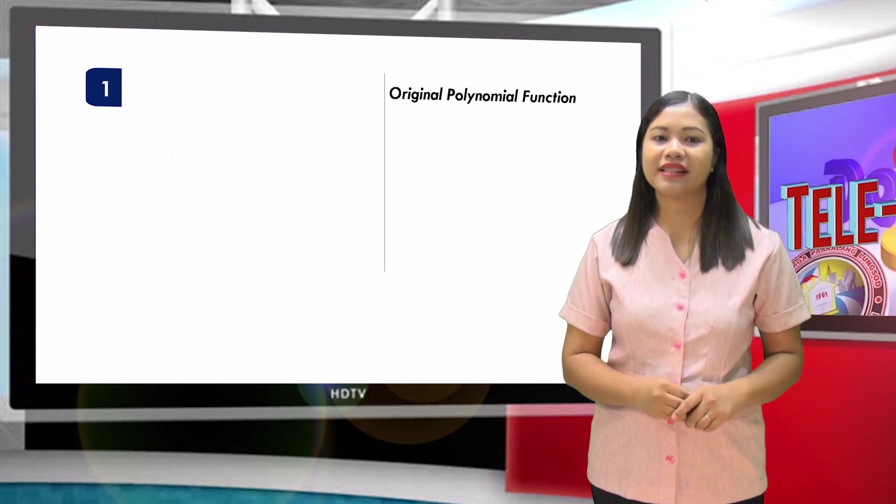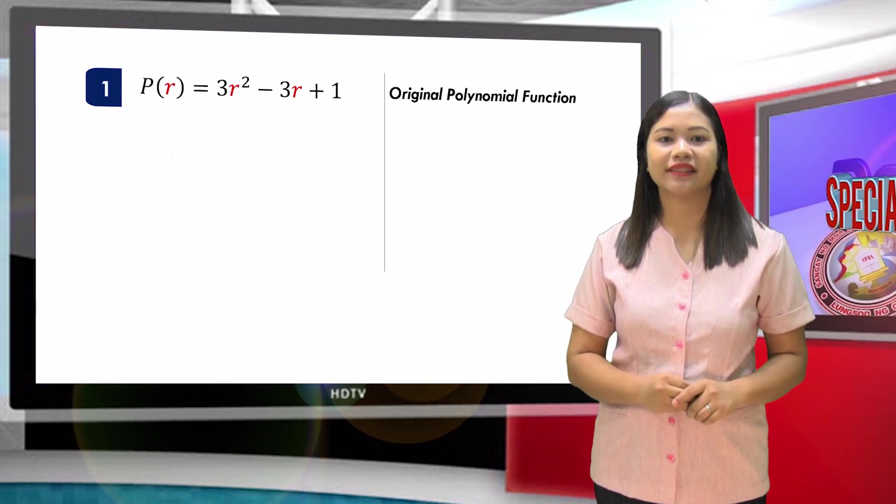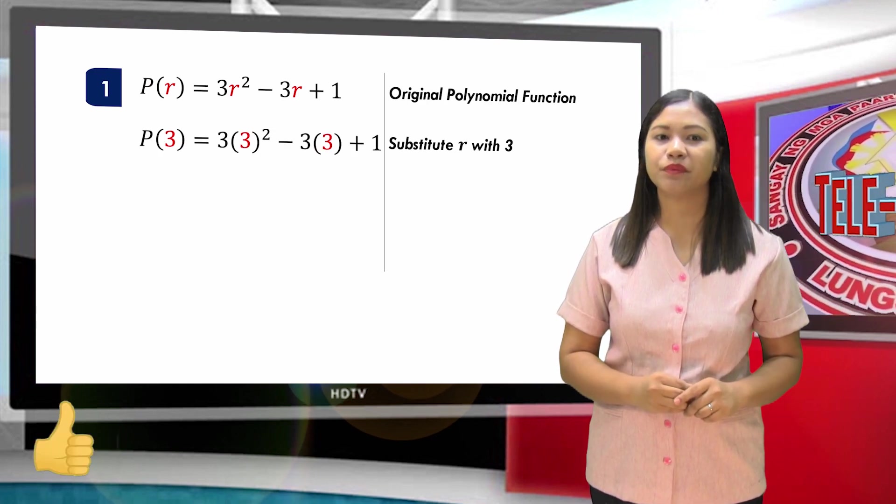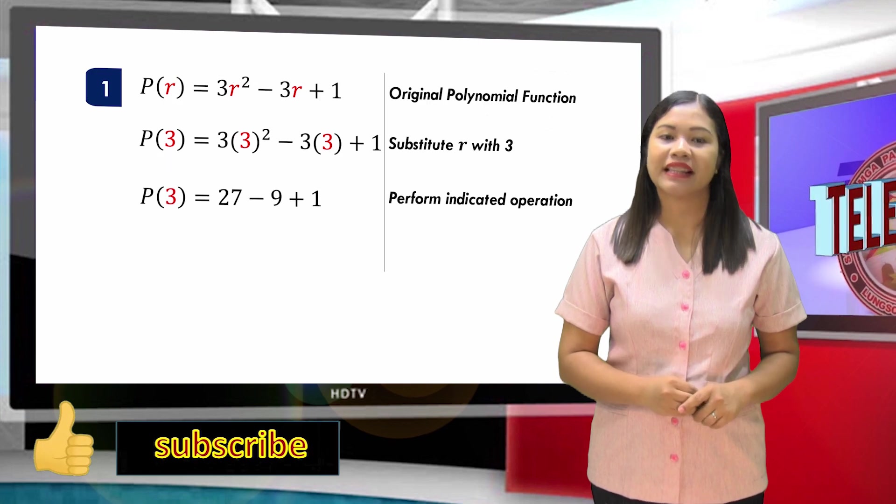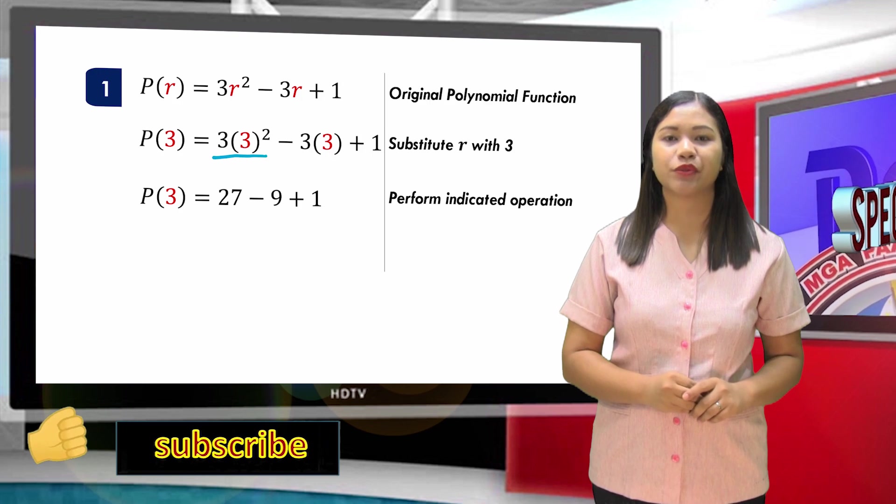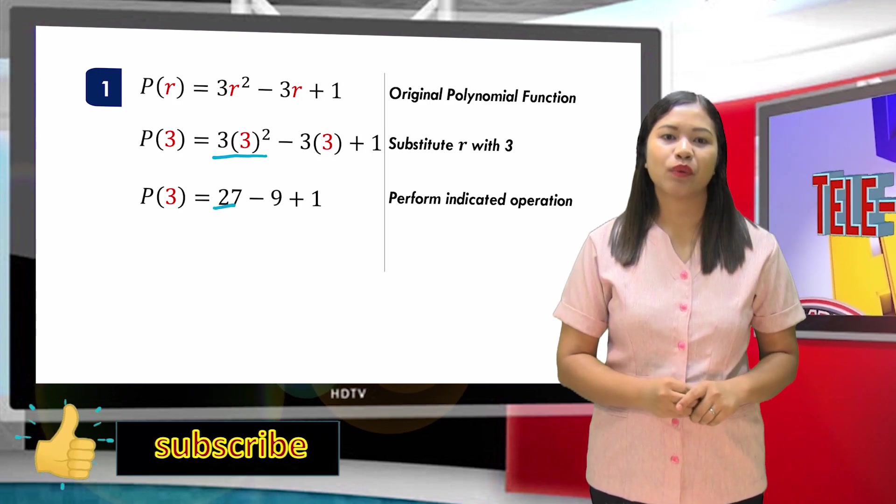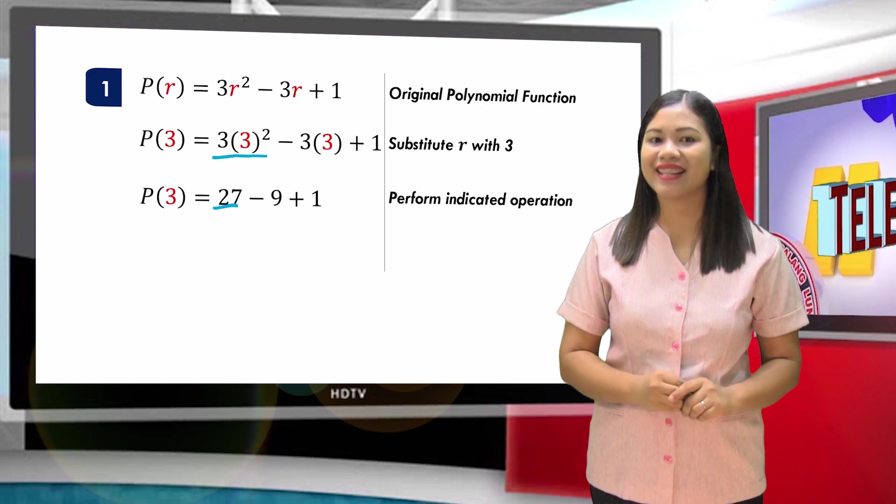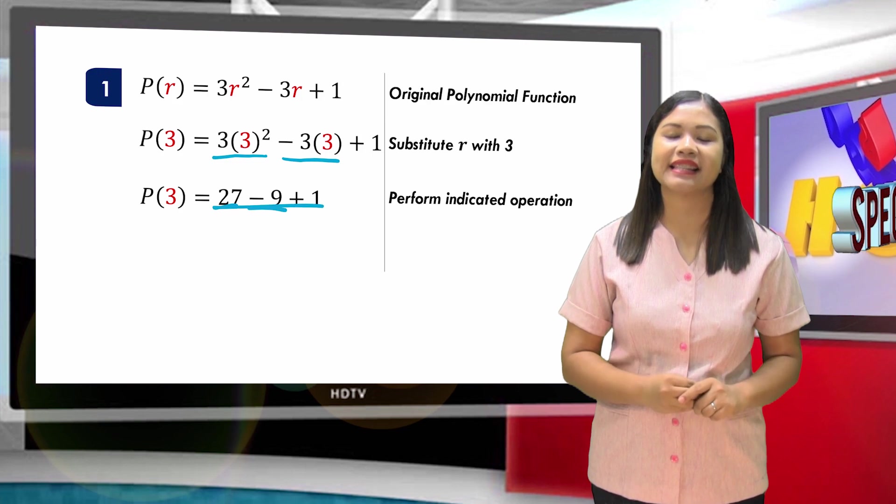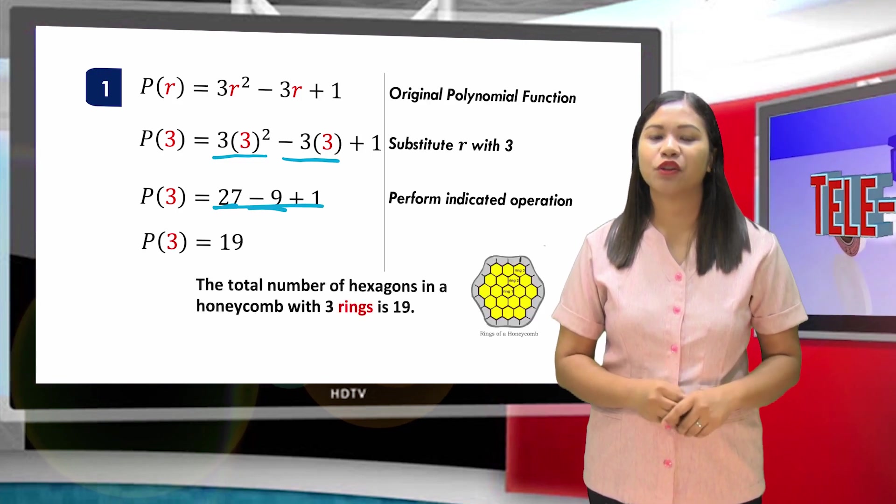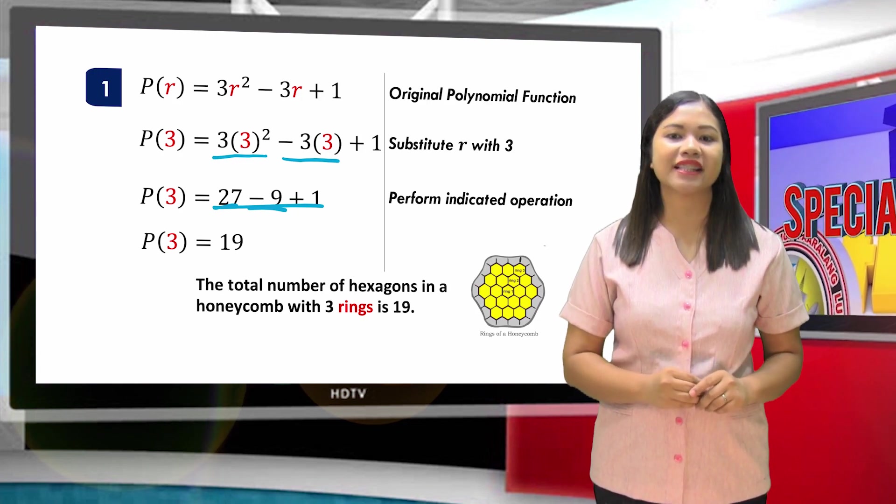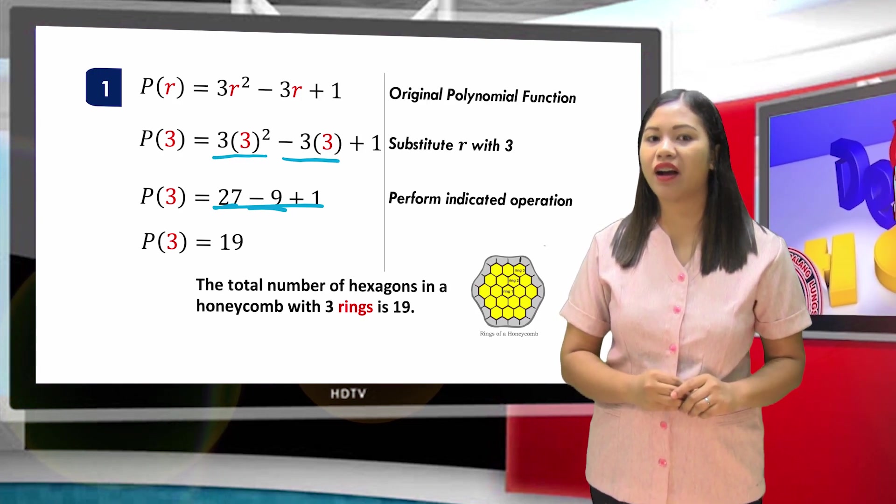Here's how we do it. This is our original function. Step 1: Substitute R with 3. Step 2: Perform indicated operation. 3 squared times 3 is 27. Negative 3 times 3 is negative 9. And 27 - 9 + 1 = 19. The total number of hexagons in a honeycomb with three rings is 19. There we have it. We have proven that this polynomial function gives the total number of hexagons in a honeycomb when R = 3.